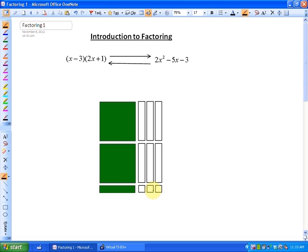Factoring is essentially the opposite of simplifying. So for example, to go from x minus 3 times 2x plus 1, to go from that product to the expression 2x squared minus 5x minus 3, that's called simplifying.